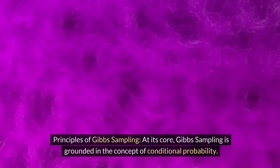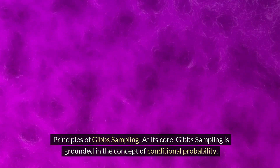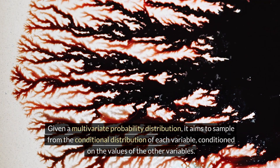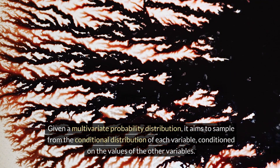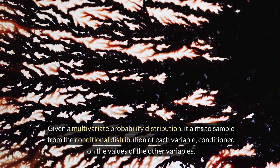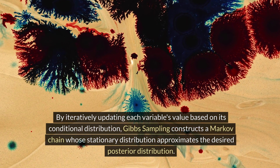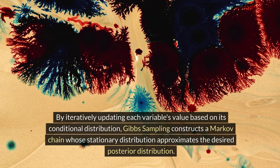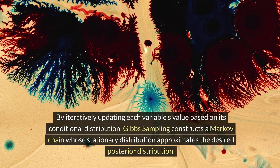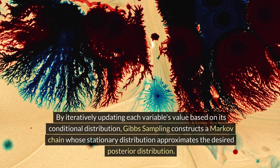Principles of Gibbs Sampling: At its core, Gibbs sampling is grounded in the concept of conditional probability. Given a multivariate probability distribution, it aims to sample from the conditional distribution of each variable, conditioned on the values of the other variables. By iteratively updating each variable's value based on its conditional distribution, Gibbs sampling constructs a Markov chain whose stationary distribution approximates the desired posterior distribution.